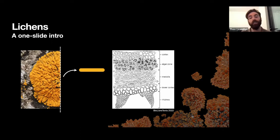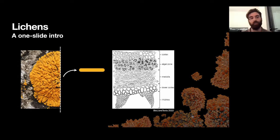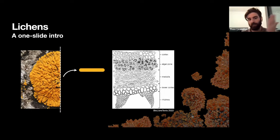For example, in this one here, you can see it's got these hair-like structures called rhizines. This morphology applies to lots of lichens, but definitely not all of them. Lichens are super variable in what they actually look like — many species don't look like this if you were to take a section.